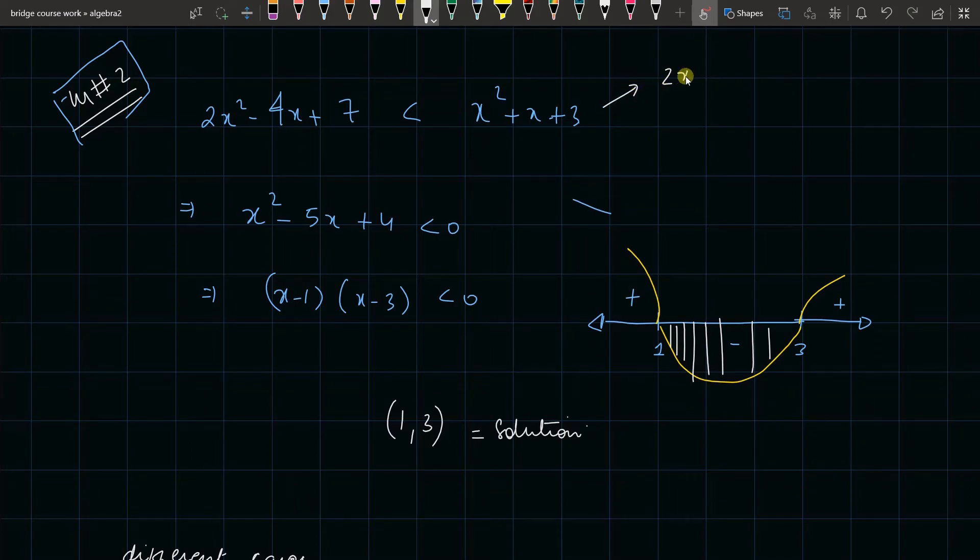The next step is I'm going to add -x² on both sides. This will give us x² - 4x + 7 less than x + 3. Now I'll add -x - 3 on both sides. Anyways, the idea is I'm going to end up with x² - 5x + 4 less than 0.